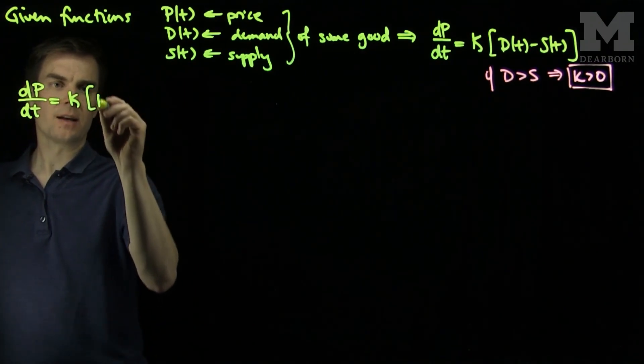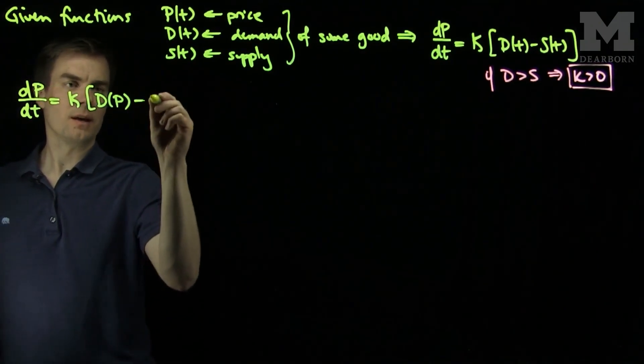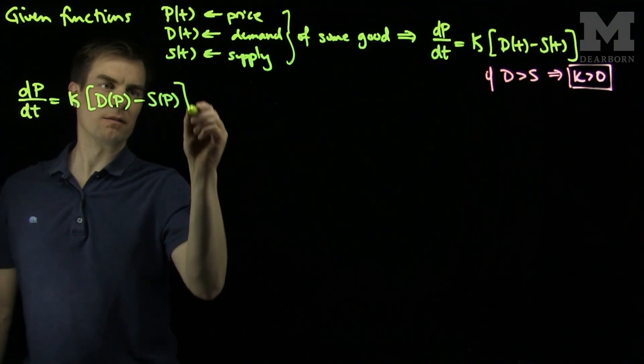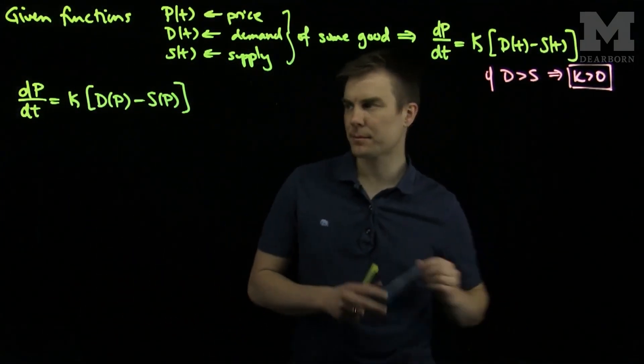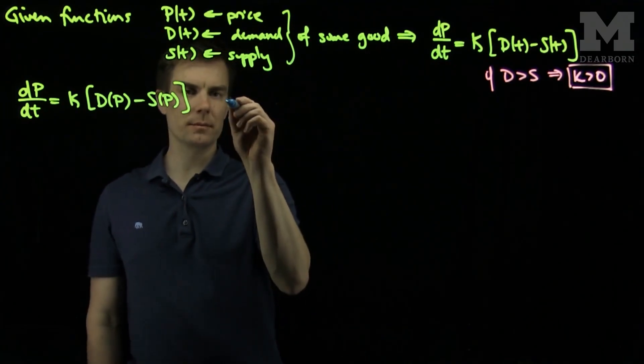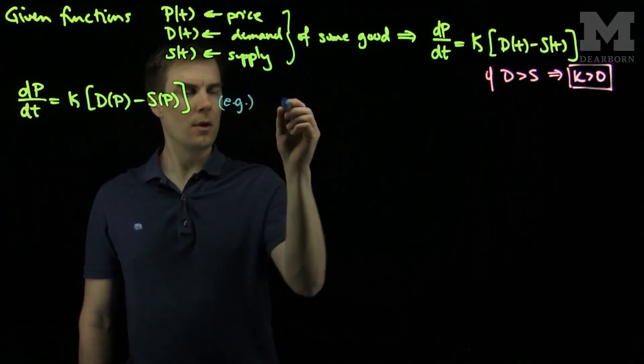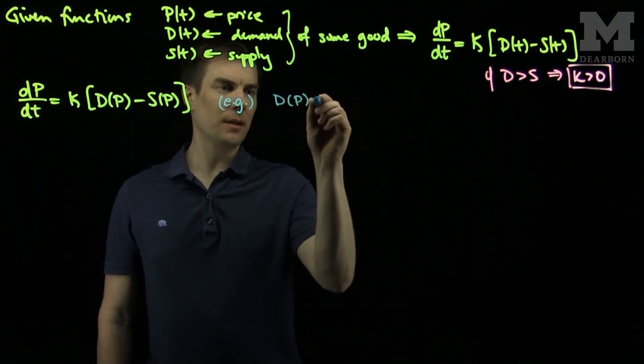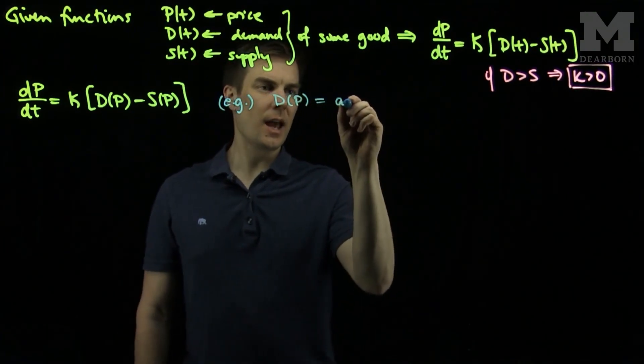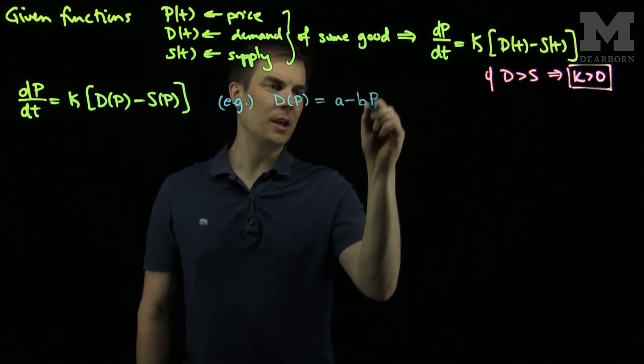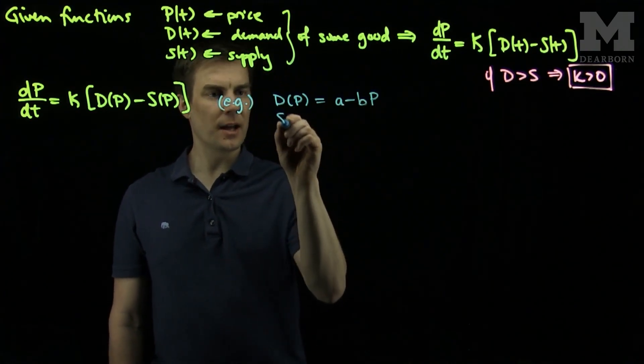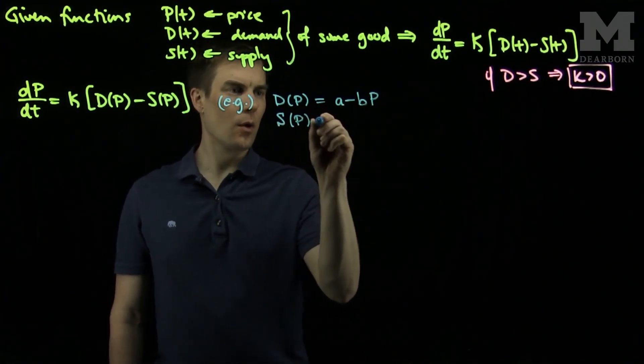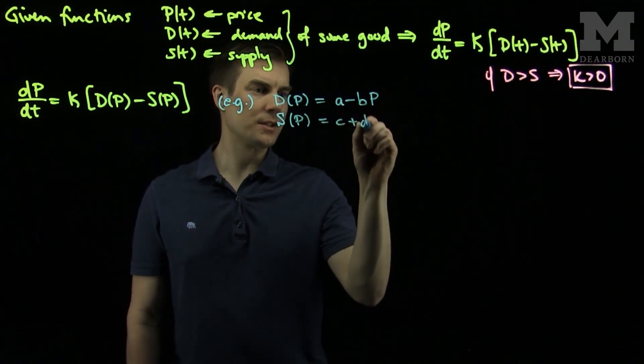As K times D(P) minus S(P). And a particular example we will focus on is the example when D(P) is a minus bp, a decreasing linear function of the price, and S(P) will be c plus dp.